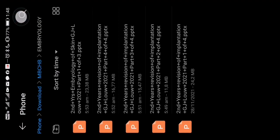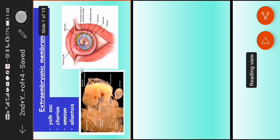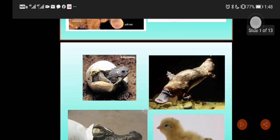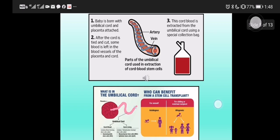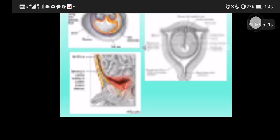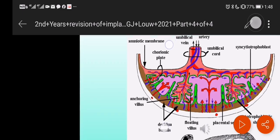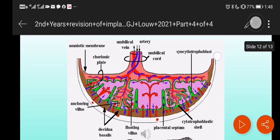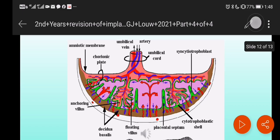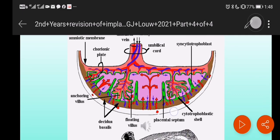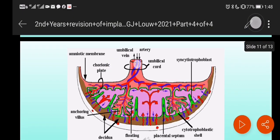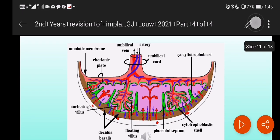Now after that, what happens is that as further growth and development occurs, what happens is the formation of the placenta. As you can see over here, this is the placenta that's going to form, and the placenta is basically a bridge between the mother, which is the side over here, and the fetus, the side over here.